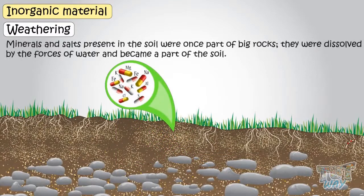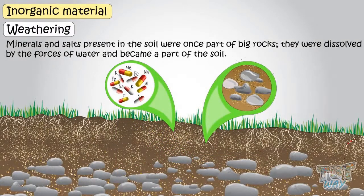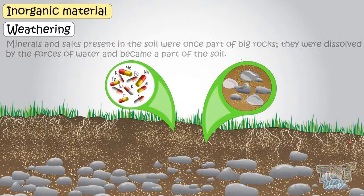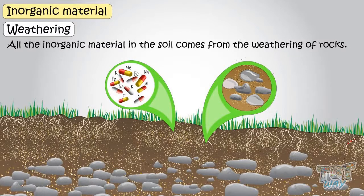Minerals and salts present in the soil also were once part of big rocks. They are dissolved by the forces of water and become part of the soil. So all the inorganic material in the soil comes from the weathering of rocks, that is, the breaking of small pieces of rocks.